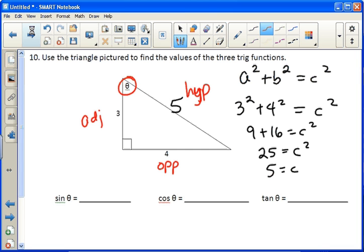Sine is opposite over hypotenuse. Cosine is adjacent over hypotenuse. And tangent is opposite over adjacent. Remember, some old hippie caught another hippie tripping on acid.